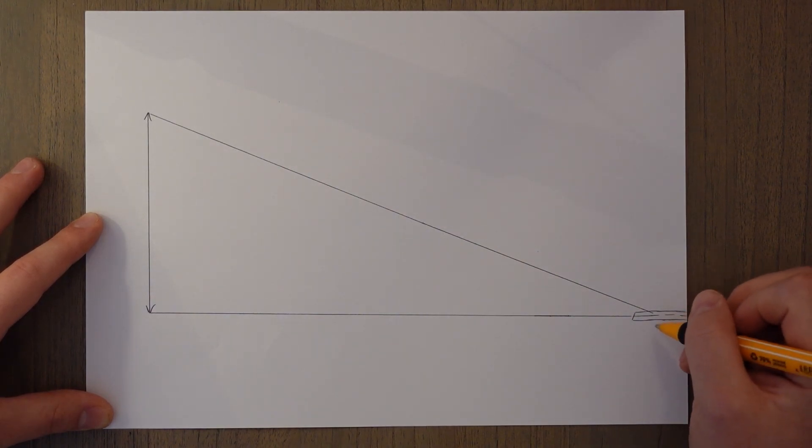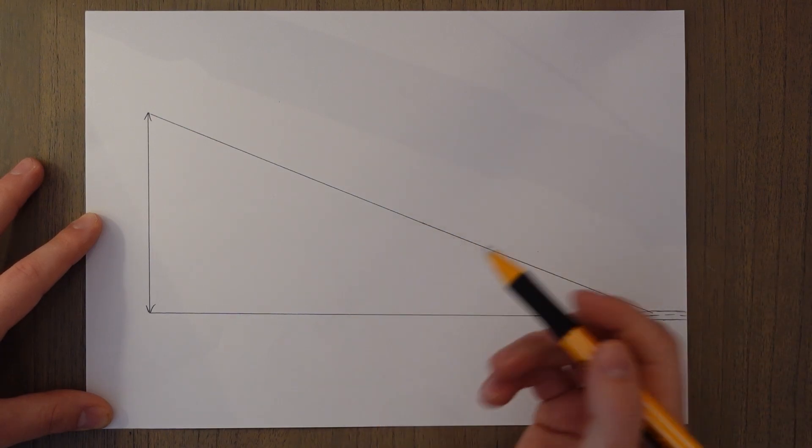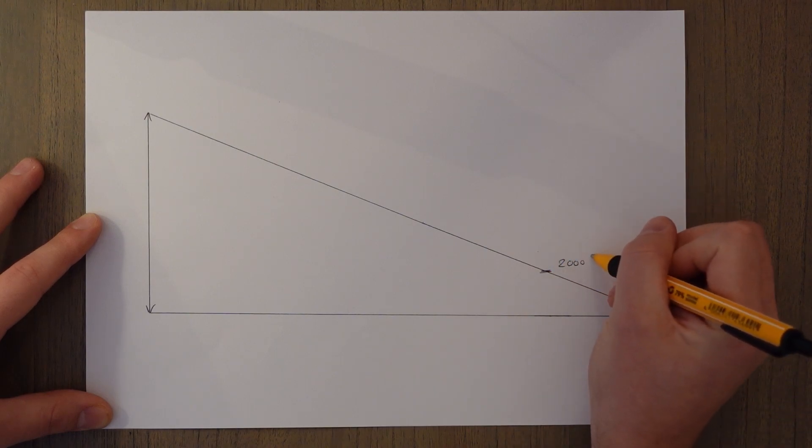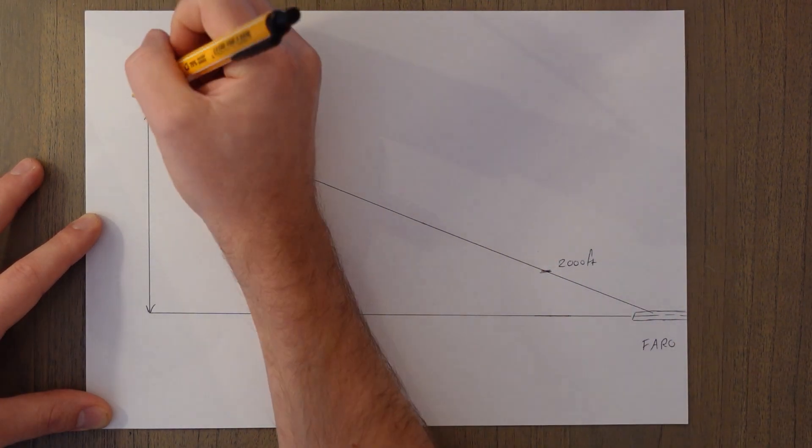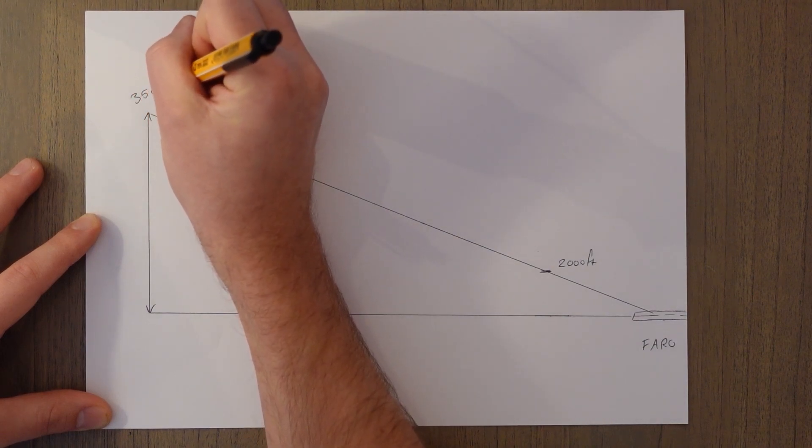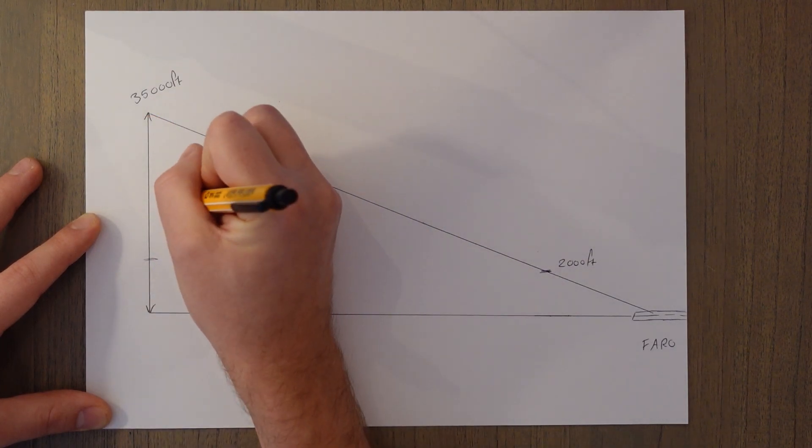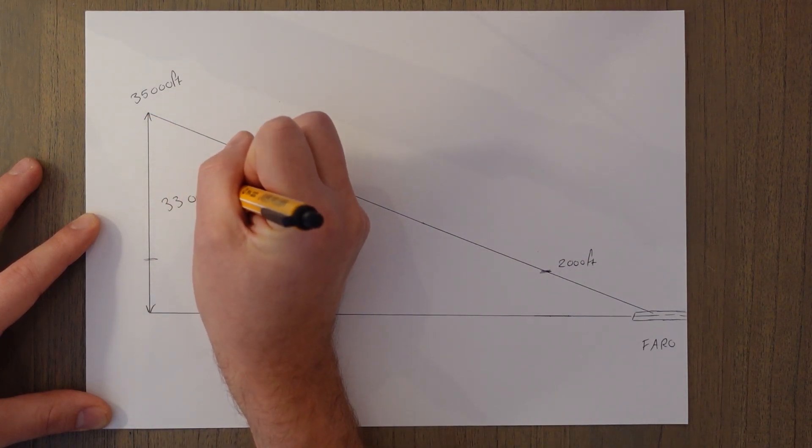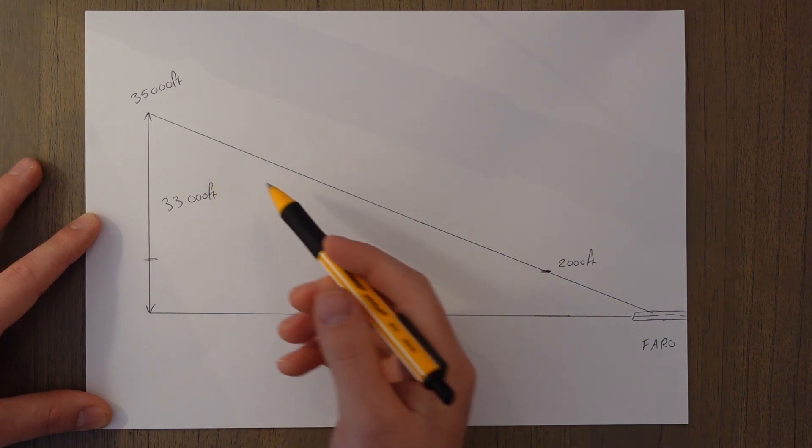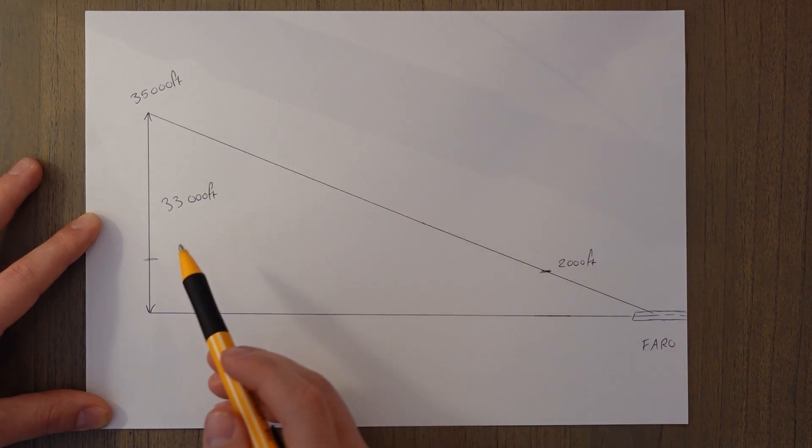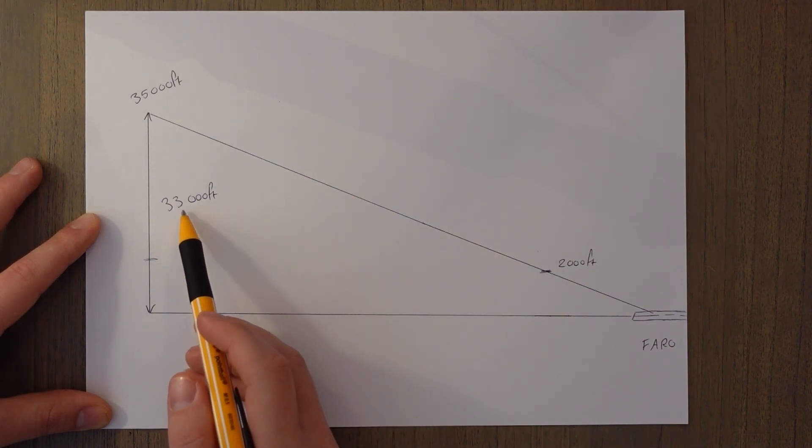So say this was our airport at Faro and we know we need to get down to that, what was it, two thousand feet, it was two thousand feet here, and we were at 35,000 feet. We know that we have to change in height by 33,000 feet, and with a nice gentle slope of three degrees, which is roughly a thousand feet for every three nautical miles, for us to descend this 33,000 feet we'll need three nautical miles for every thousand feet of that.